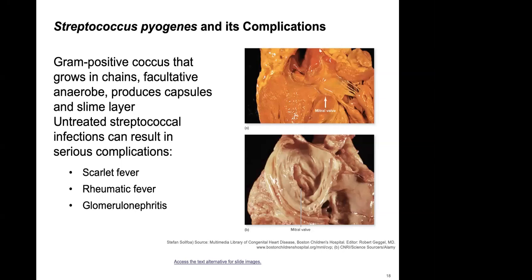Streptococcus pyogenes is a very common bacterial cause of pharyngitis, though most pharyngitis is viral. Strep pyogenes is a gram-positive coccus that grows in chains. Untreated strep infections can result in serious complications, most seriously inflammation of the heart valves, which can cause infection on those valves that is difficult to treat. The most recommended treatment for infected heart valves is actually valve replacement.